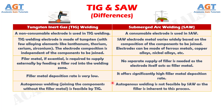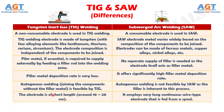Number 5: autogenous welding, joining the components without filler metal, is feasible by TIG welding, whereas autogenous welding is not feasible by submerged arc welding as the filler is inherent to this process. Number 6: in TIG welding, the electrode is of short length, around 10 to 20 centimeters, whereas submerged arc welding employs a very long continuous wire-type electrode that is fed from a spool.